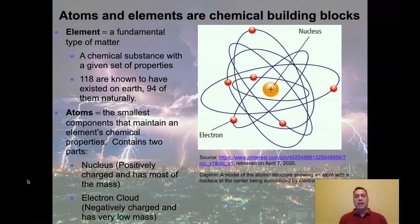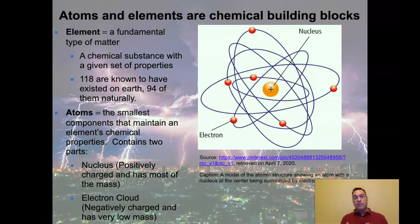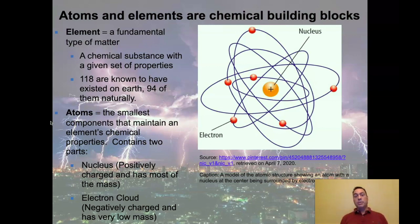Let's begin with the fundamental elements of matter. An element is a fundamental type of matter — a chemical substance with a given set of properties. It could get hot easily, be transparent, be a liquid or solid at room temperature. Right now there are 118 elements known to have existed on Earth, 94 of them naturally, meaning human beings in labs have made the others. All of these fundamental pieces of matter are composed of atoms. We're going to build the atom out because once you have it put together you can stack some really interesting knowledge on top of that.